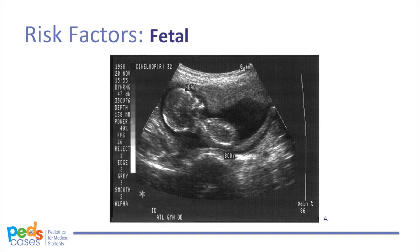The exact etiologies of IUGR are currently unknown. However, there are certain risk factors linked to the development of the condition in utero. We can think of risk factors as falling into three broad categories: fetal, maternal, and placental. Fetal risk factors are innate to the fetus and generally lead to symmetric IUGR. Examples include multiple gestation, chromosomal abnormalities such as trisomy 21, 18, or 13, genetic syndromes such as Bloom syndrome or Russell-Silver syndrome, congenital anomalies such as tracheoesophageal fistulas or congenital heart defects, congenital infections such as rubella or varicella, or metabolic disorders such as galactosemia or phenylketonuria. Many of these risk factors can be identified through prenatal screening, although unfortunately cannot be reversed once diagnosed.